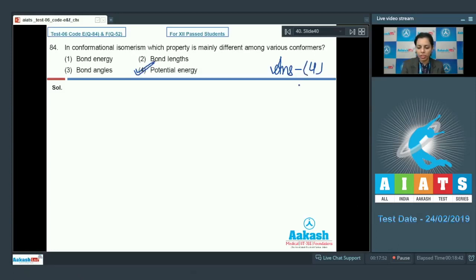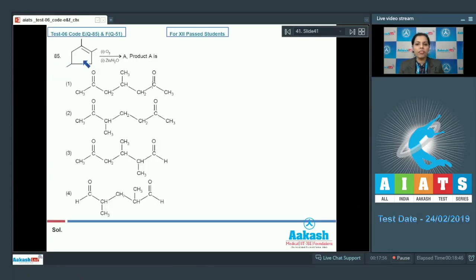Let's take question number 85. Question number 85 is there in which a compound is given, its ozonolysis is done and further reduction is also there. It means reductive ozonolysis you are doing and after that product A is formed.